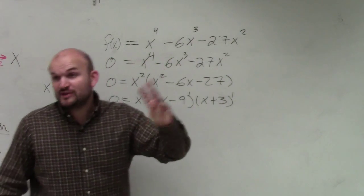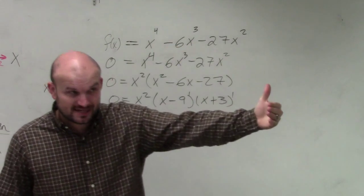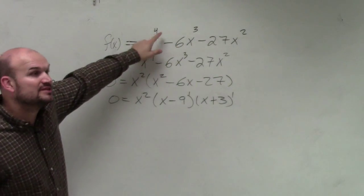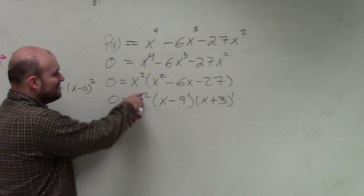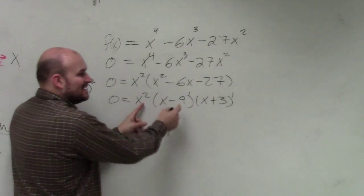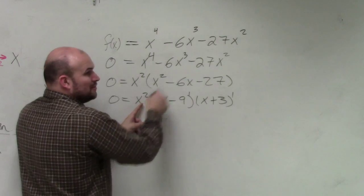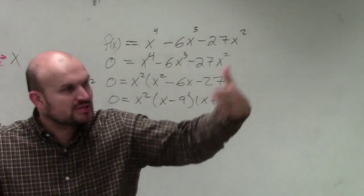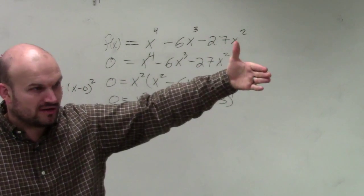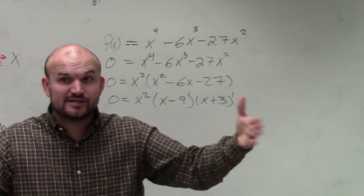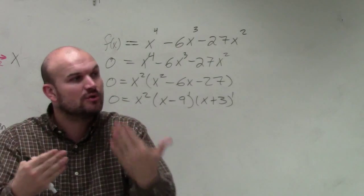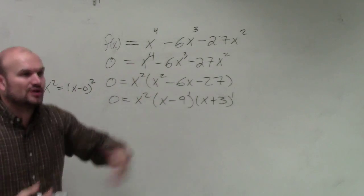3. So 3 factors is going to produce 3 x-intercepts, right? But the degree tells me what? 4, right? However, since I have a multiplicity of 2 and then the other two factors, that's 2, 3, and 4, which gives me 4 solutions. So that multiplicity allows me to add up to 4. Does that make sense? Because I only have three 0's or three x-intercepts. But the multiplicity counts twice because it's the same 0 twice.